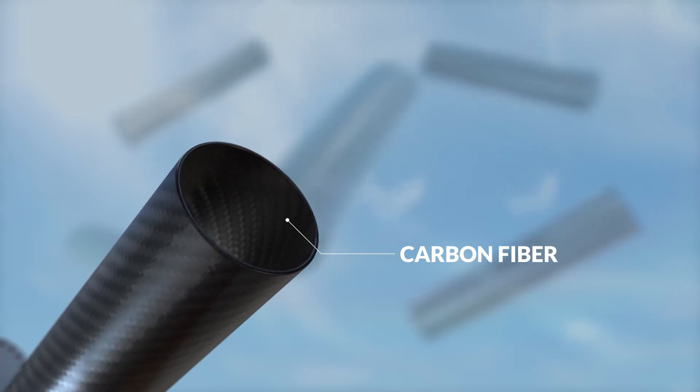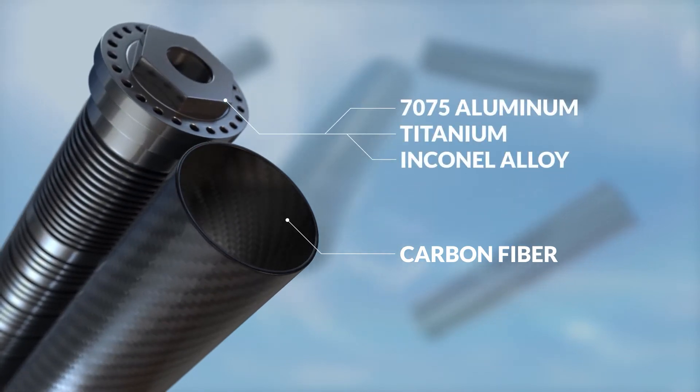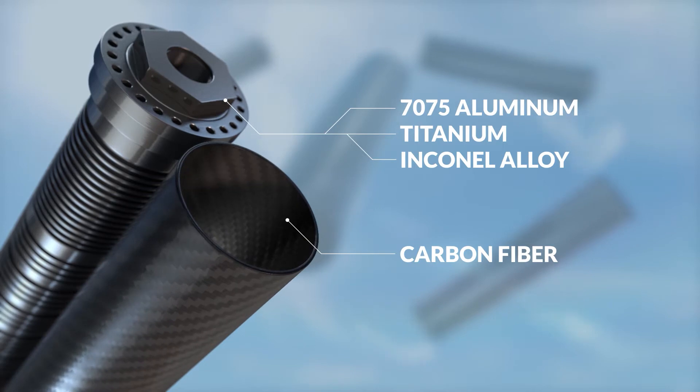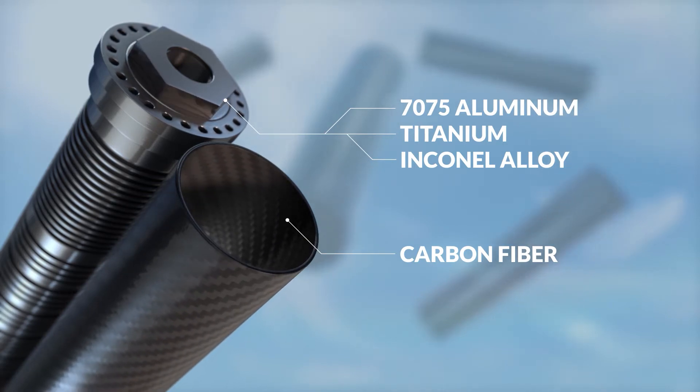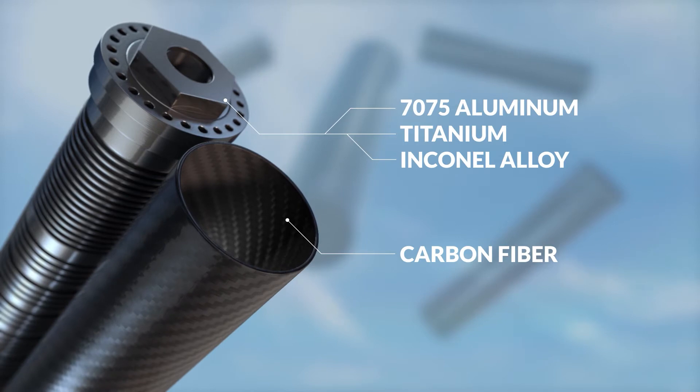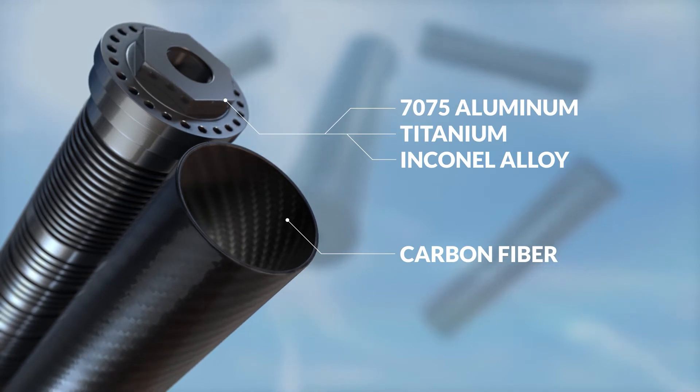In addition to carbon fiber, 7075 aluminum, titanium, and inconel alloy are incorporated into suppressor designs to provide uncompromising performance while keeping overall weight as light as possible.